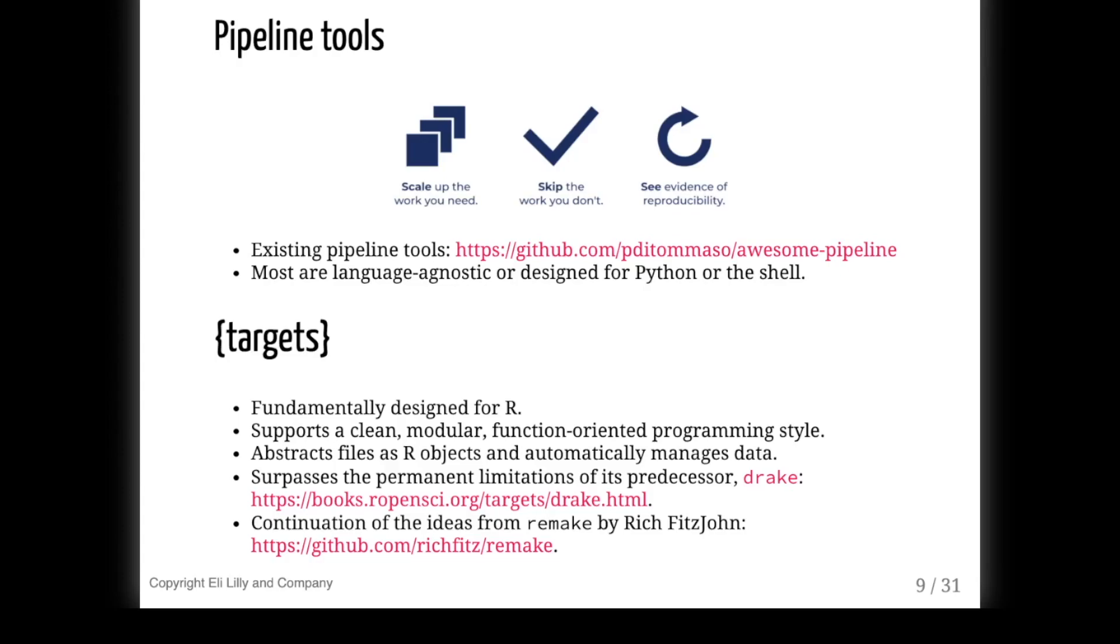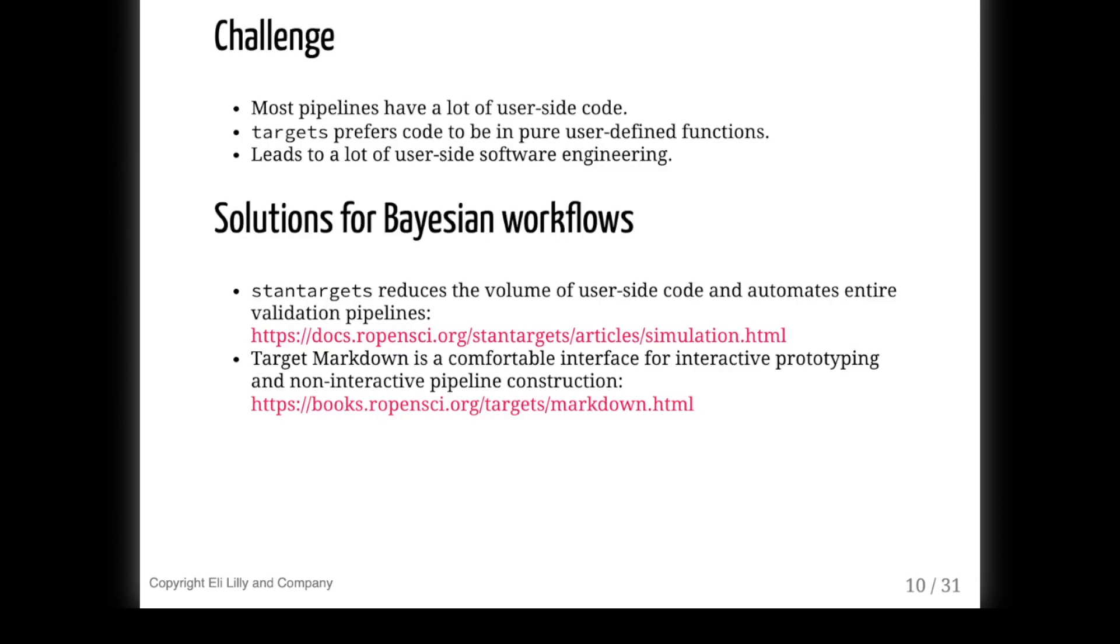There are hundreds of pipeline tools for other languages, but historically not a whole lot for R. The targets package, which builds on its predecessors drake and remake, is designed to work seamlessly within R itself. It encourages good programming practices, it abstracts files as variables, and it natively integrates with R Markdown. So the targets package lets you work more naturally in R than a language-agnostic pipeline tool would. But there are drawbacks.